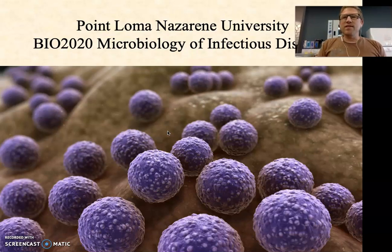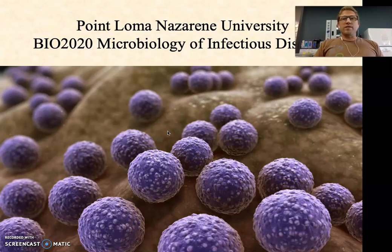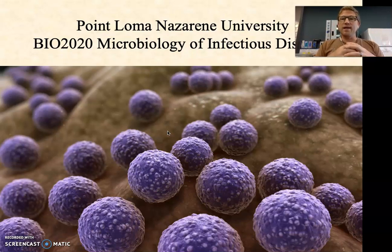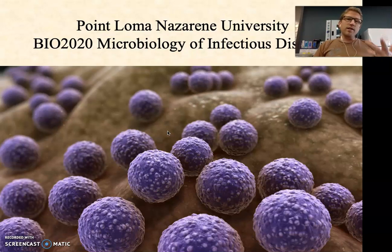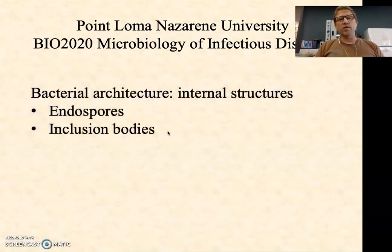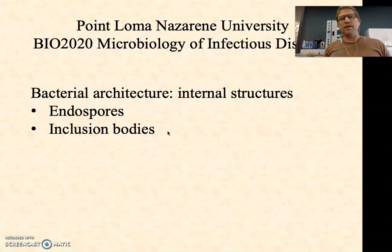Hi everyone. In this video we're going to continue with our discussion about prokaryotic cells, bacteria, and their architecture. We've talked already about what's going on on the inside, the interface between the inside and the outside, flagella, fimbria, pilli — very common external structures. And what I want to do now is look at two important internal structures.